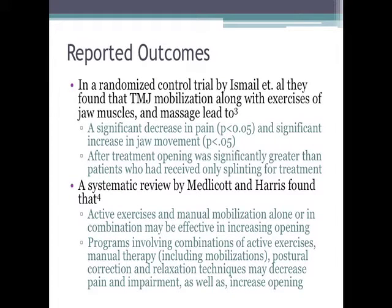In a randomized controlled trial by Ishmael et al., they found that TMJ mobilization, along with exercises of the jaw muscles and massage, led to a significant decrease in pain and significant increase in jaw movement. Opening was significantly greater than in patients who had received only splinting. A systematic review by Mel Decotton-Harris found that active exercises and manual mobilization alone or in combination may be effective in increasing opening. Programs involving combinations of active exercises, manual therapy, postural correction, and relaxation techniques may decrease pain and impairment, as well as increase opening.